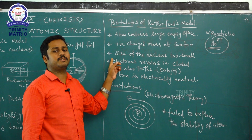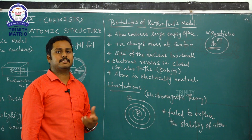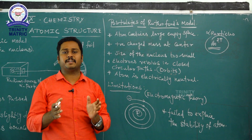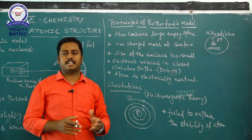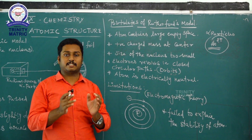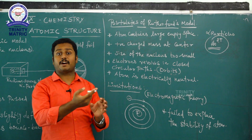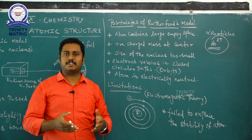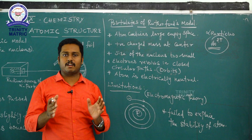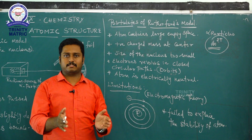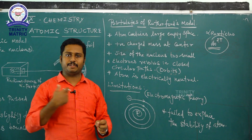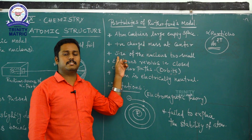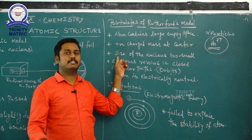The third postulate: the size of the nucleus is too small compared to the size of the atom. If you consider a football as the nucleus, the surrounding 5 kilometers represents the total size of the atom. So the nucleus is extremely small relative to the whole atom.